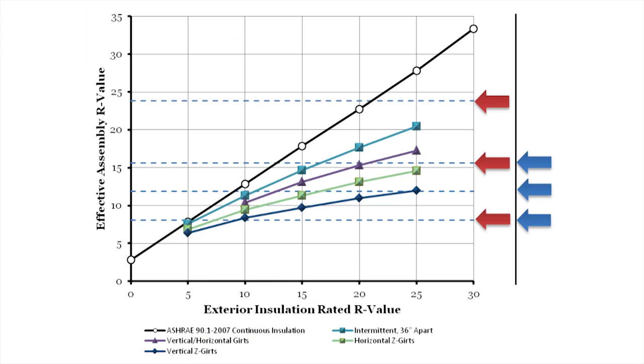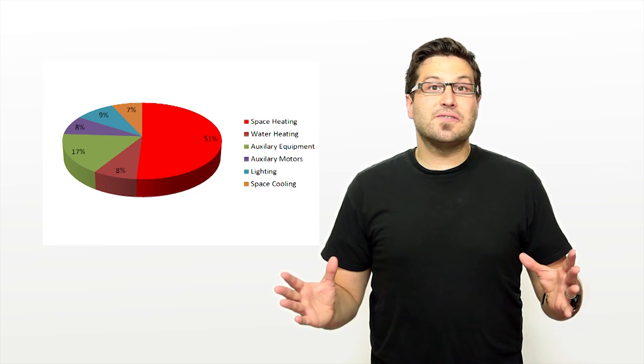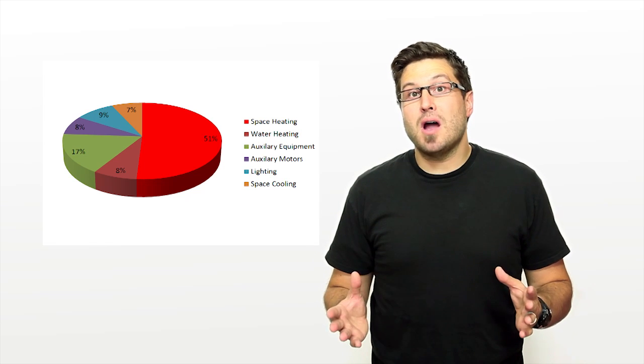When we looked at alternate clip systems, we found that very simple solutions like using intermittent Z-girts or clips instead of continuous ones could easily improve overall thermal effectiveness by 50%. This finding is important because in modern buildings, approximately half of all energy consumed is in heating and cooling, and the walls are the biggest source of thermal transfer.